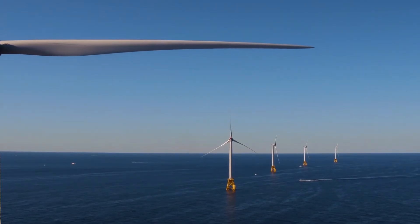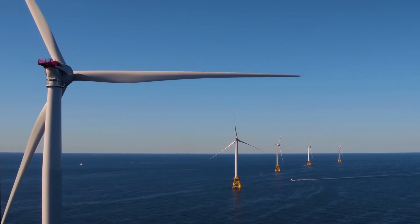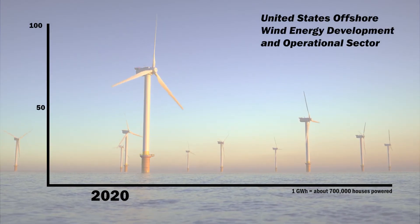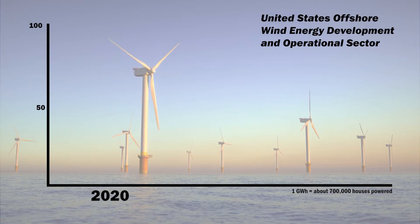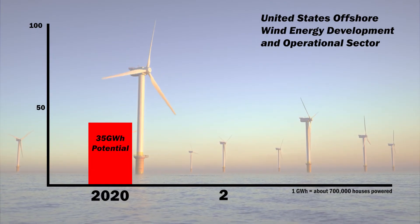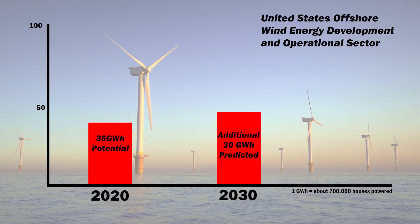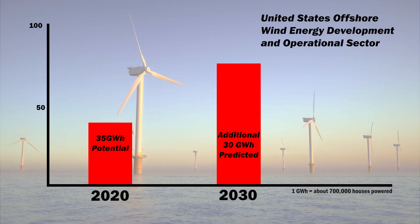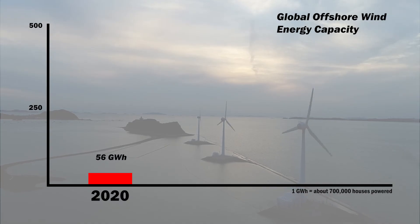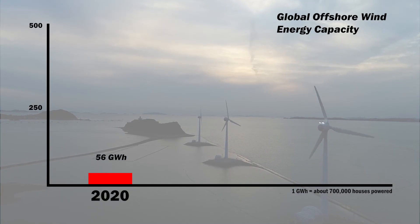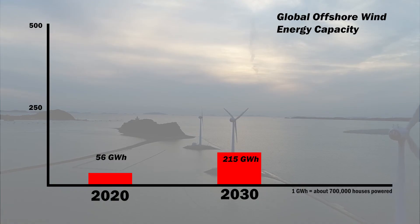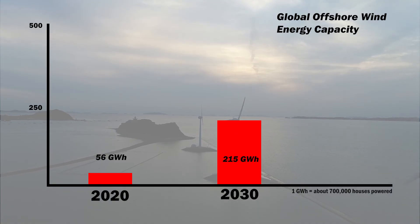Sustained high-speed operation and generation also increases wear, maintenance, and repair requirements proportionally. In 2020, the United States offshore wind energy development and operational sector grew to a potential generating capacity of 35 gigawatts. The United States is projecting growth of another 30 gigawatts of offshore wind energy by 2030. In 2020, global offshore wind energy capacity reached 56 gigawatts, and global offshore wind energy is expected to accelerate with forecasts indicating an increased global cumulative offshore wind capacity to 215 gigawatts by 2030.